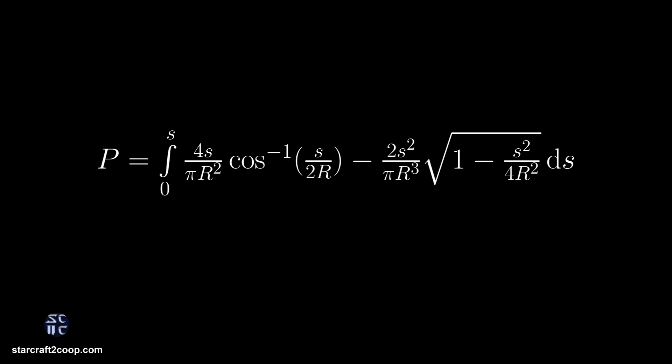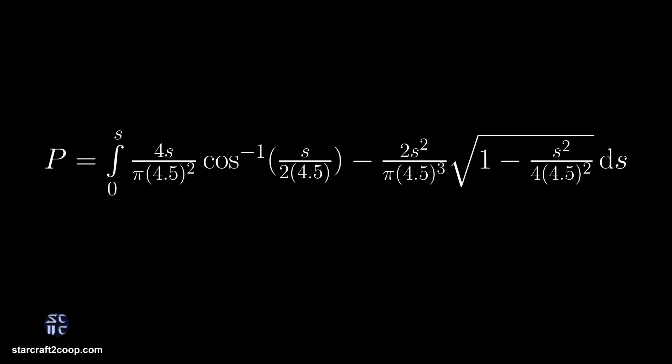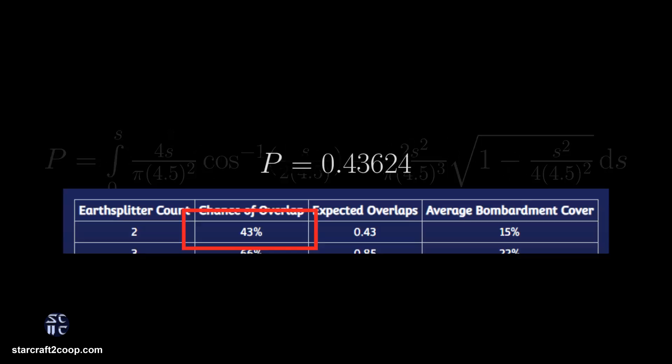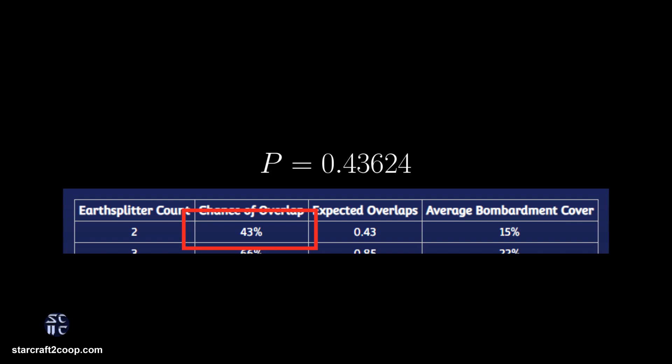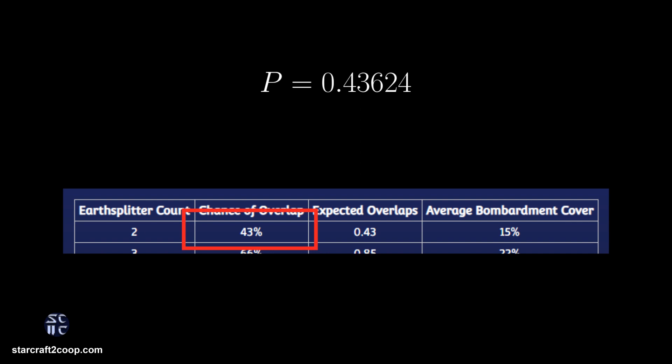We'll start with two Earthsplitters instead. There's a mathematical equation that can give you the distribution of distances between the two Earthsplitter shots. I've shown the equation here — it's called the disk line-picking equation. While it looks a little intimidating, it's not very difficult to solve because r is constant — it's the Earthsplitter AOE size. After solving this equation, I get pretty much the same answer as from my simulation data, which was very helpful for validating whether my calculations were correct.